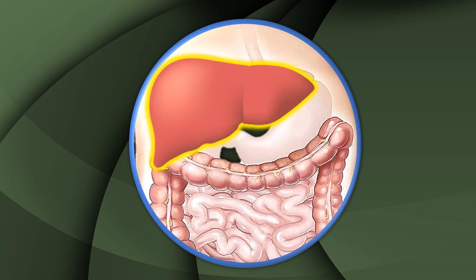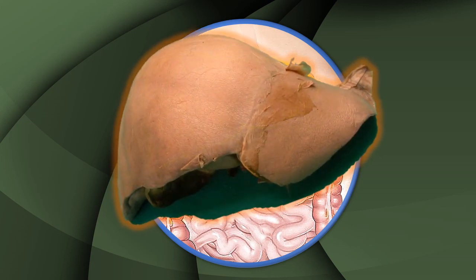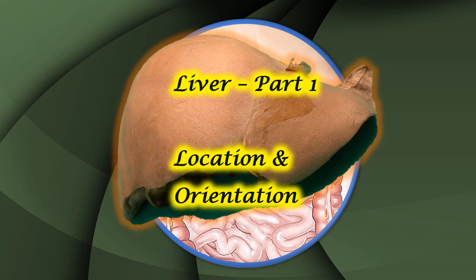Good morning friends, welcome to this edition of VBS Anatomy. We are beginning a series of video lectures on the topic: gross anatomy of the liver. As you know, this is a very important abdominal organ with a lot of clinical importance and relations all around it. In part one of the series, we will have an overview of its location and orientation — which quadrants of the abdomen it covers and what is its shape.